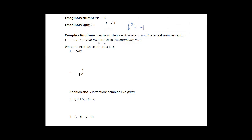Complex numbers can be written as a plus bi, or a minus bi if b happens to be negative. a is the real part, and bi is the imaginary part. b is a real number multiplied with the imaginary unit i.